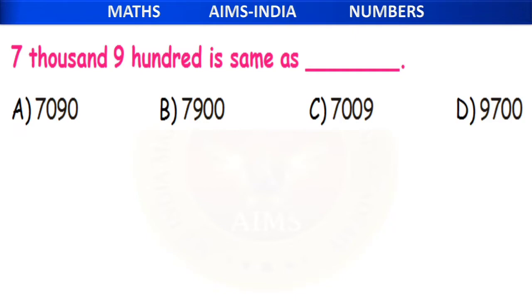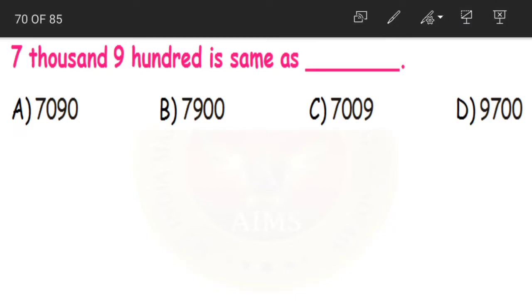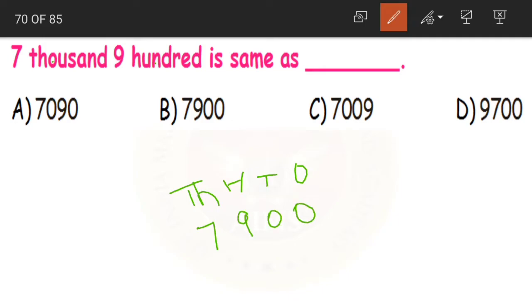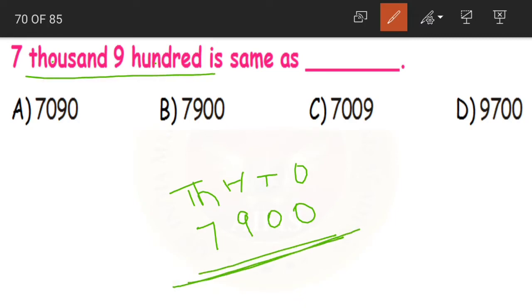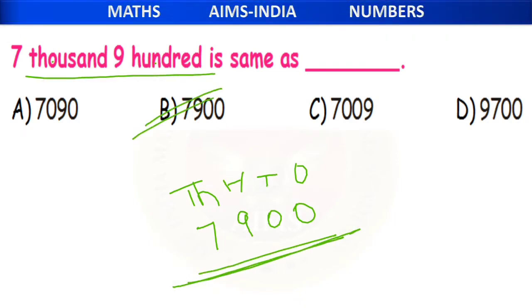Next: 7,900 is the same as dash. 7 is in the thousands place and 9 is in the hundreds place, with remaining places as zeros. So 7,900 is the same as 7,900 — that is option B.